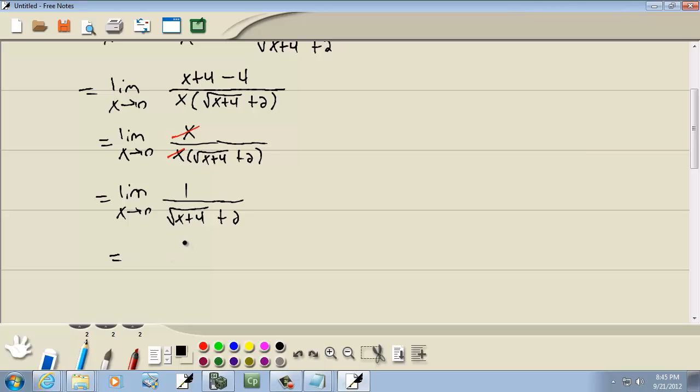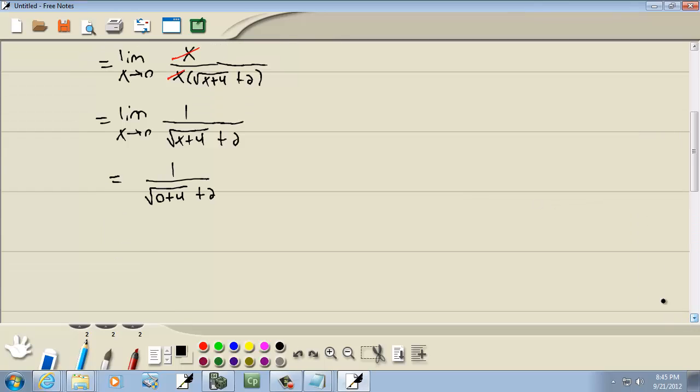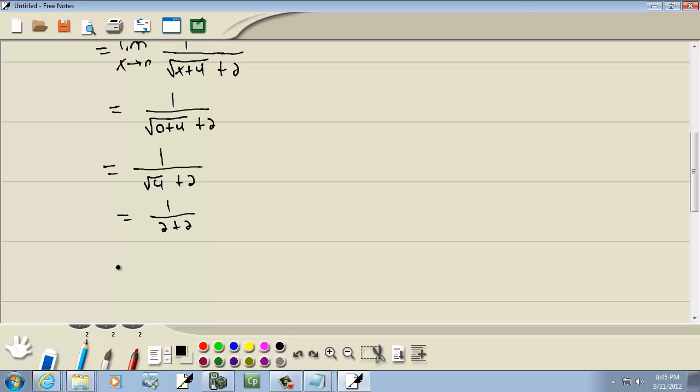Now we can do direct substitution. So we'll plug 0 in for x. So we've got 1 over square root of 0 plus 4 plus 2. And 0 plus 4 is 4, so we've got square root of 4 plus 2. And square root of 4 is 2, so we've got 2 plus 2, which gives us 1 fourth. And that's our answer.